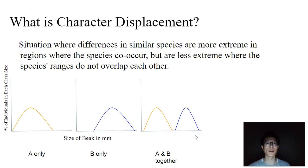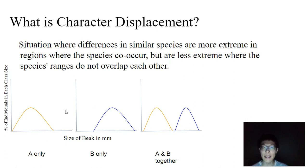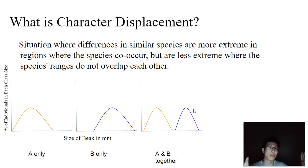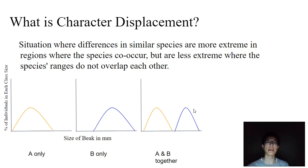Overall, through character displacement, you can have niche partitioning events that occur to allow the birds to survive together sympatrically and continue on their generations without aggressive competition with one another. Character displacement is a situation where differences in similar species are more extreme in regions where species co-occur, but less extreme where ranges do not overlap. This is a key concept that can allow for speciation, or maintain a barrier by maximizing fitness when one population feeds on one extreme and another utilizes resources at the other extreme — decreasing competition, increasing resource partitioning, and allowing for sympatric survival.